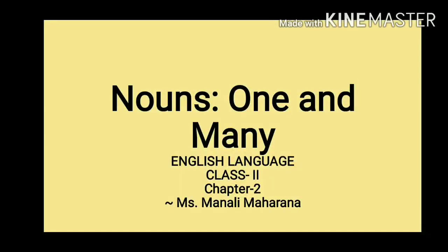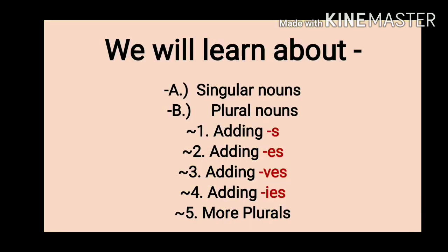Today we are going to learn about one and many in a little bit more detail. We are going to learn about singular nouns and plural nouns. There are five different kinds of plural nouns: adding S, adding ES, adding VES, adding IES, and some more plurals.